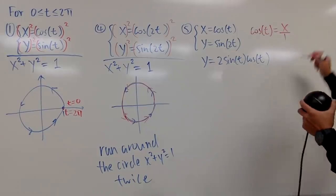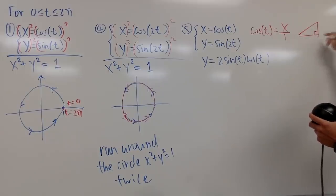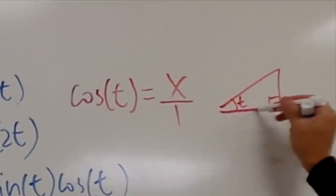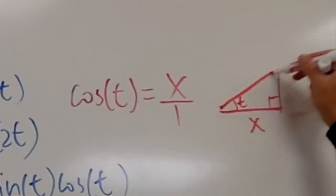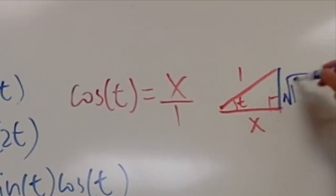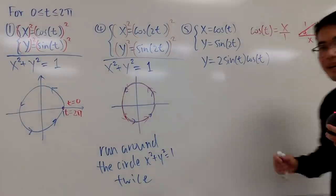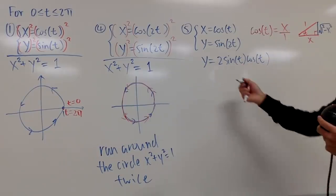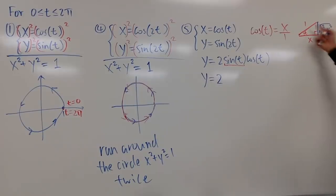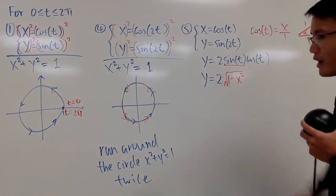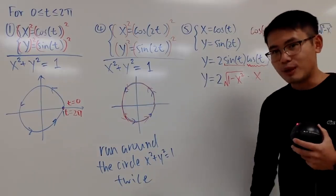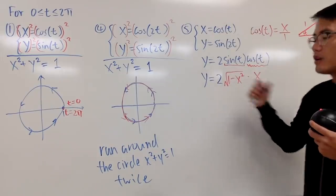To find sin(t), use a right triangle where cos(t) = x/1, so the adjacent side is x and the hypotenuse is 1. By the Pythagorean theorem, the opposite side is √(1 - x²). Therefore sin(t) = √(1 - x²). Substituting back: y = 2 · √(1 - x²) · x. This expresses the parametric equations in Cartesian form.